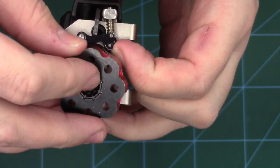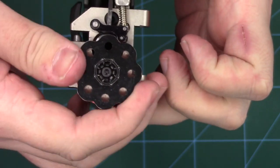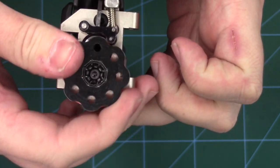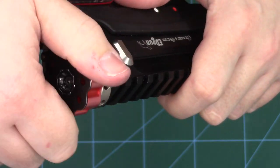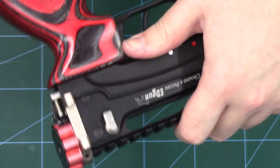So then we can just reinstall our magazine. And that rotates nice and smoothly there now. No grittiness or anything like that, so it should cycle perfectly.